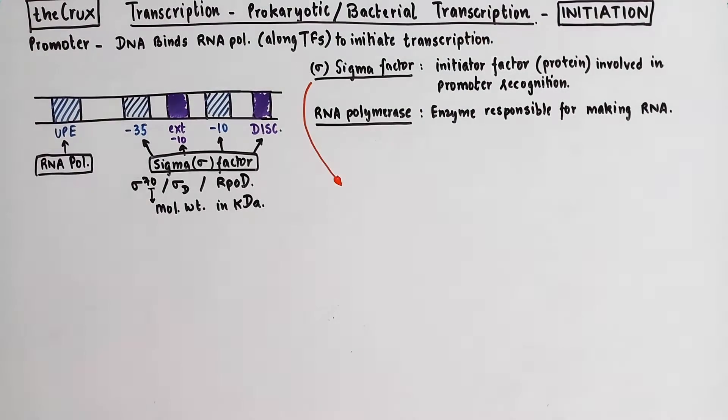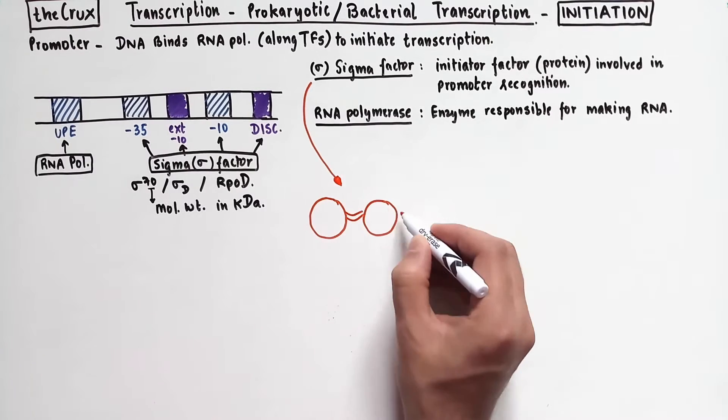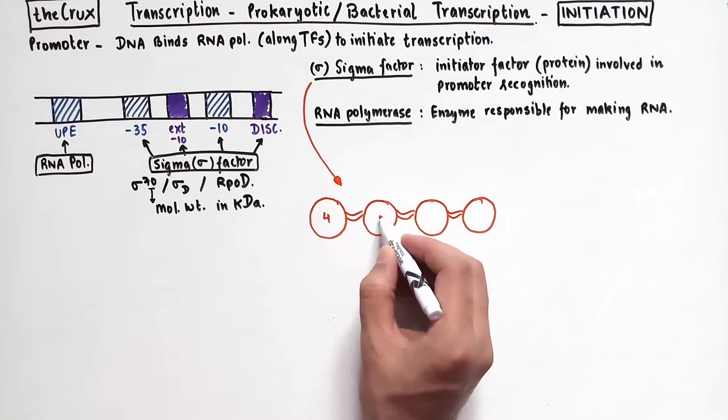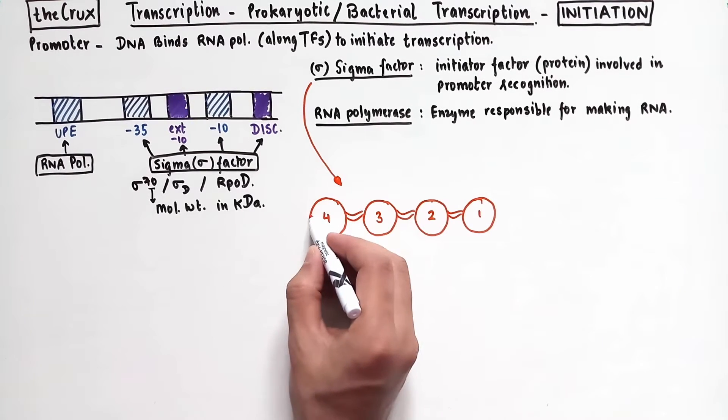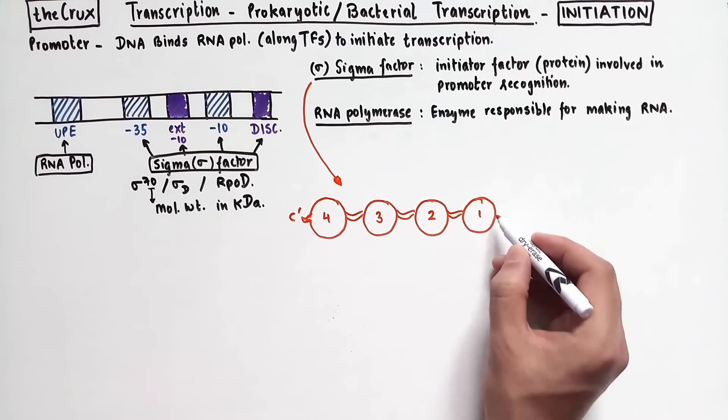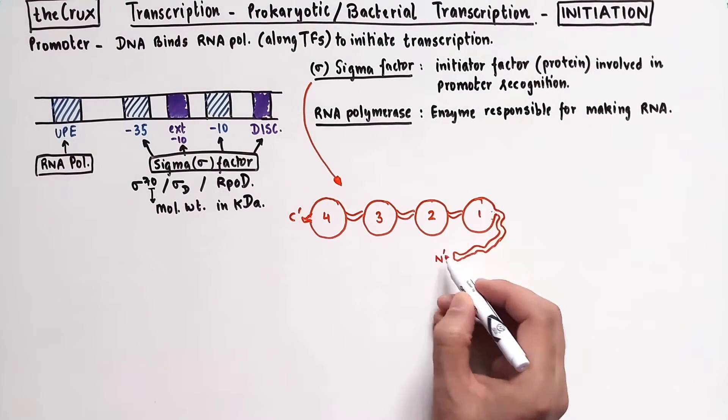If we look at the structure of the sigma factor, we see that it is made up of four DNA binding domains, simply named from 1, 2, 3, and 4. And these domains are joined by flexible linkers. The C terminus of the protein is at the end of the fourth domain and the beginning or N terminus is at the first domain.